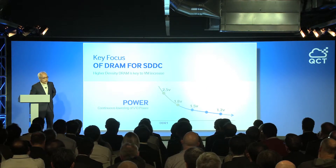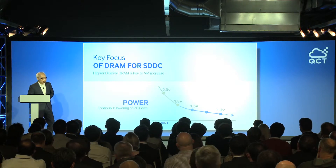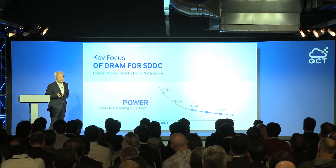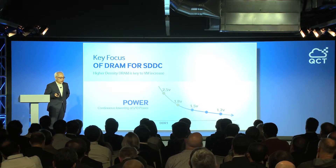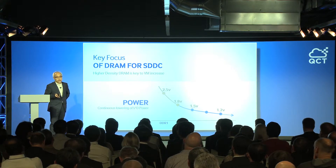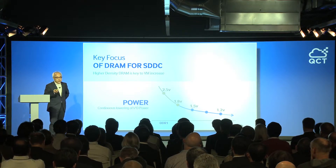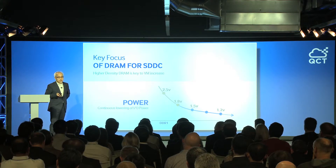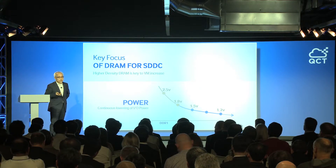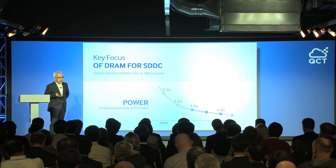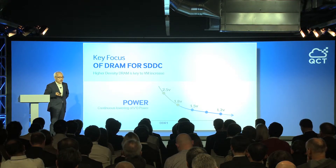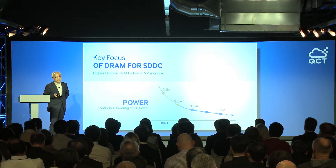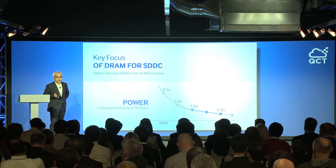Power is also important. We have reduced DRAM power from 2.5 down to 1.2 volts. Probably within a couple of years, DRAM power supply would be down to sub-1 volt, at which point it can match up with the voltage of the CPU.